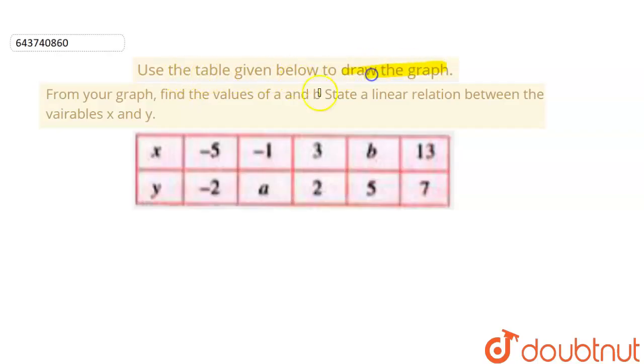The question is to use the table given below and draw the graph. Then from the graph we have to find the values of a and b. We also have to state a linear relation between the variables x and y.